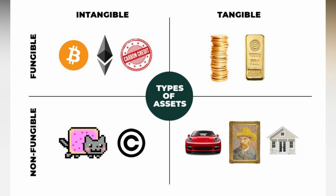If you look at the table, fungible assets include tangible ones like money or gold, because I can give you money and you give me money — it's mutually interchangeable. Another asset that is fungible but intangible is cryptocurrency: you can exchange 10 bitcoins for 10 bitcoins and be happy about it.